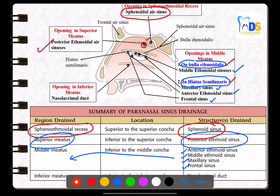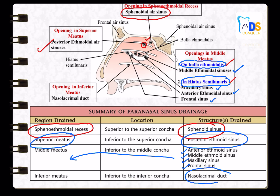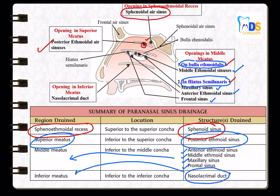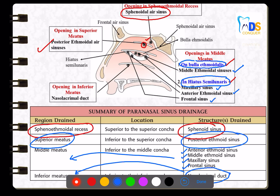The structure that drains into the inferior meatus is the nasolacrimal duct. This nasolacrimal duct is guarded by the valve of Hasner at the inferior meatus.